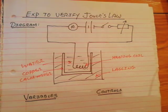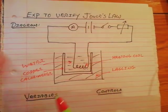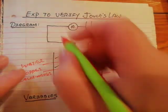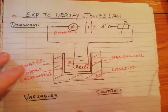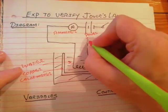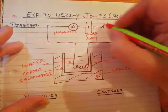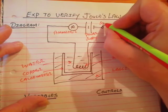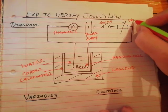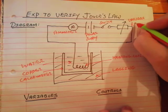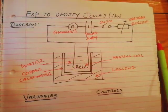The heating coil converts electrical energy into heat energy. In this part of the circuit we have an ammeter, which measures the electric current. We have a power supply, which supplies the electrical energy. And we have a switch — quite useful in this circuit — and a variable resistor in order to change the current. That is the circuit diagram for the experiment to verify Joule's Law.